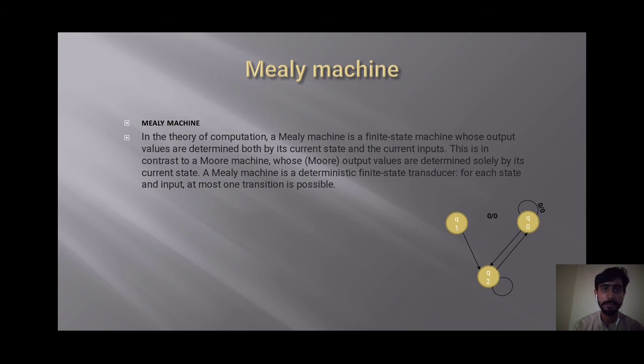Mealy machine. In the theory of computation, a Mealy machine is a finite-state machine whose output values are determined both by its current state and the current input. This is in contrast to a Moore machine, whose output values are determined solely by its current state. A Mealy machine is a deterministic finite-state machine. For each state and input, at most one transition is possible.